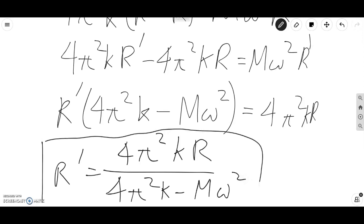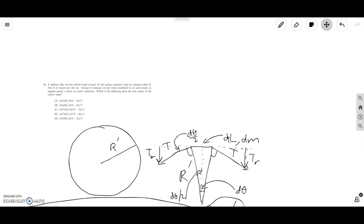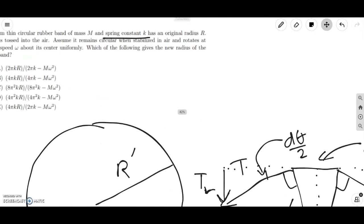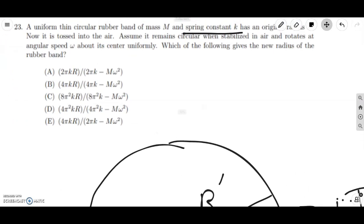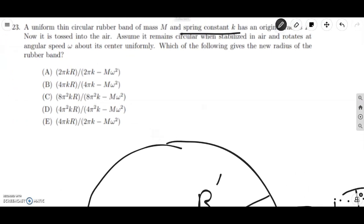And now we go back to the problem and we look at the answer choices. Let's zoom in here. And we can see that D is what we're looking for. And we are done. Thank you.